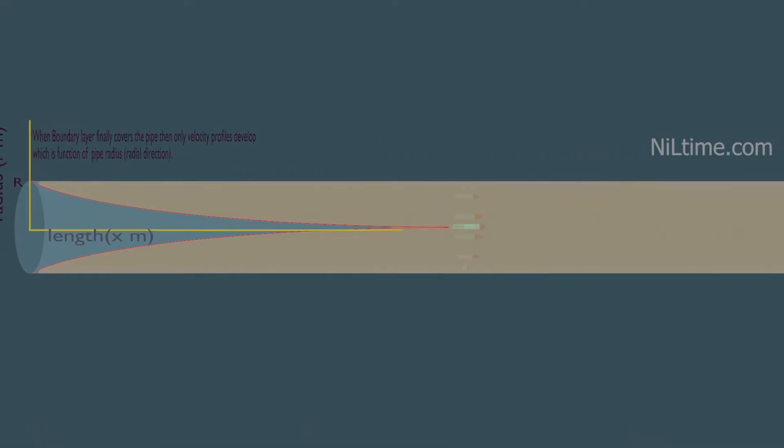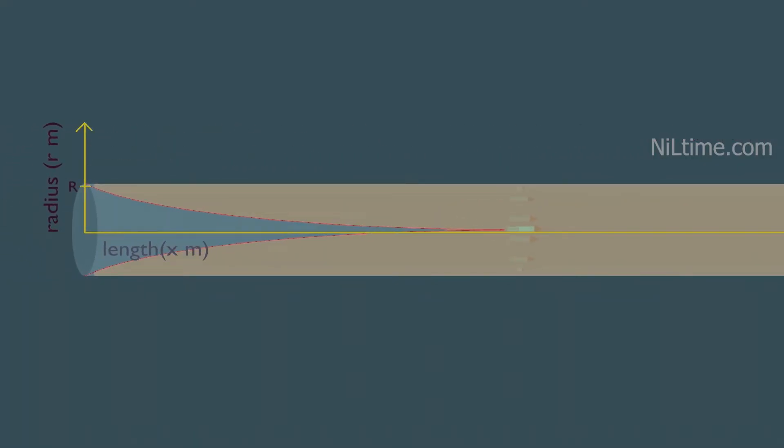Remember, at first, water velocity is a function of pipe length and pipe radius, but when the boundary layer fills the entire pipe, then velocity will just be a function of pipe radius. Keep that in mind.